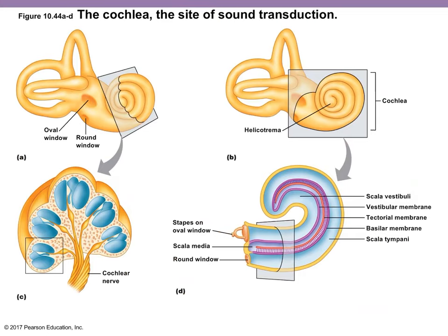Let's look at the functional anatomy of the cochlea. There are three different ducts. The duct where sound waves enter the cochlea is called the vestibular duct — your physiology textbook calls it the scala vestibuli. The vestibular duct is filled with a fluid called perilymph. Perilymph extends to the end of the cochlea called the helicotrema, and then it's continuous with the lower duct. That lower duct is called the scala tympani, or tympanic duct, and it ends at the round window.